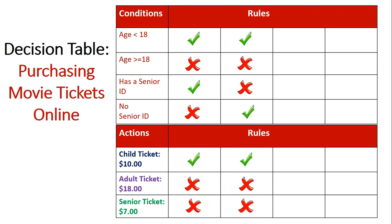If we look at the third column, they are over 18 and they have no senior ID. In this scenario, they're going to be charged an adult ticket of $18.